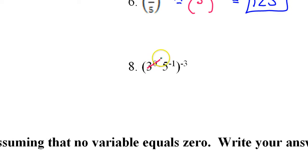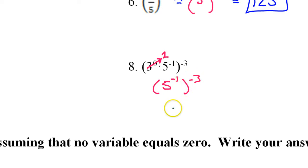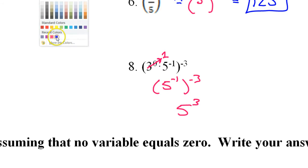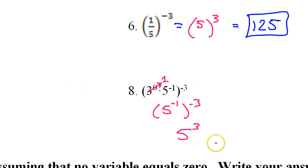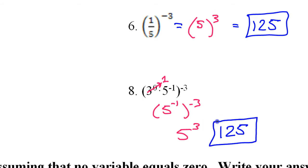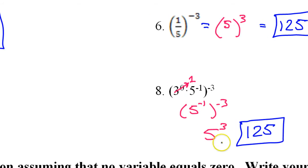3 to the 0 power is 1, and 1 times something is not going to change anything. So now I have 5 to the negative 1 power to the negative 3 power. When you raise a power to a power you multiply, so this will be 5 to the positive 3 power — negative times a negative is positive. We just did this: 5 to the 3rd power is 125. If you forgot, use a 4-function calculator: 5 times 5 times 5.